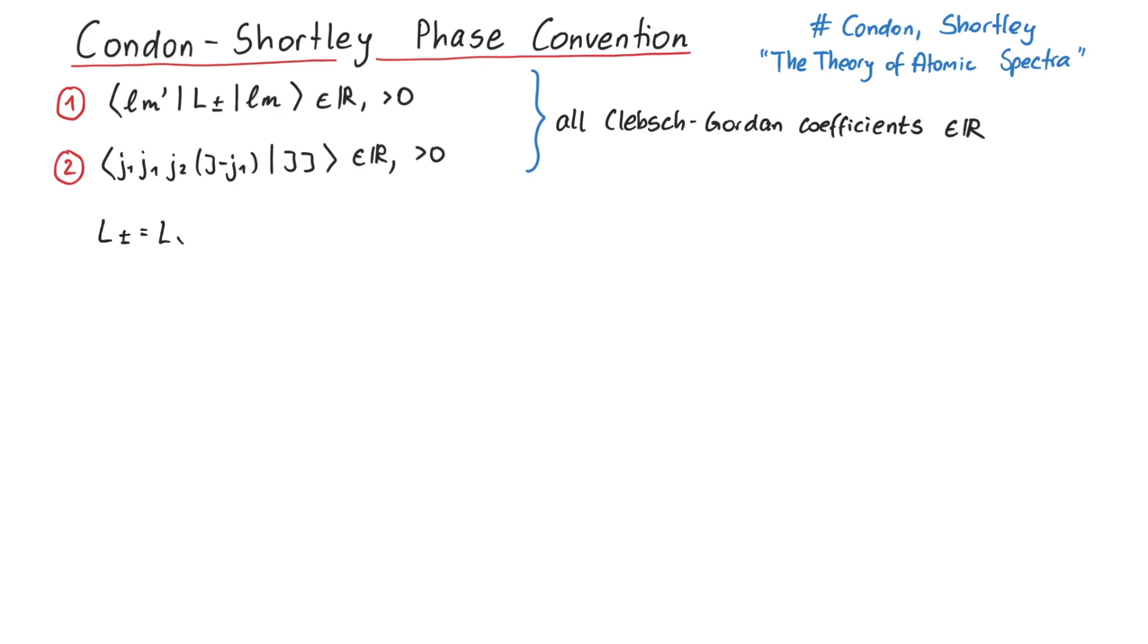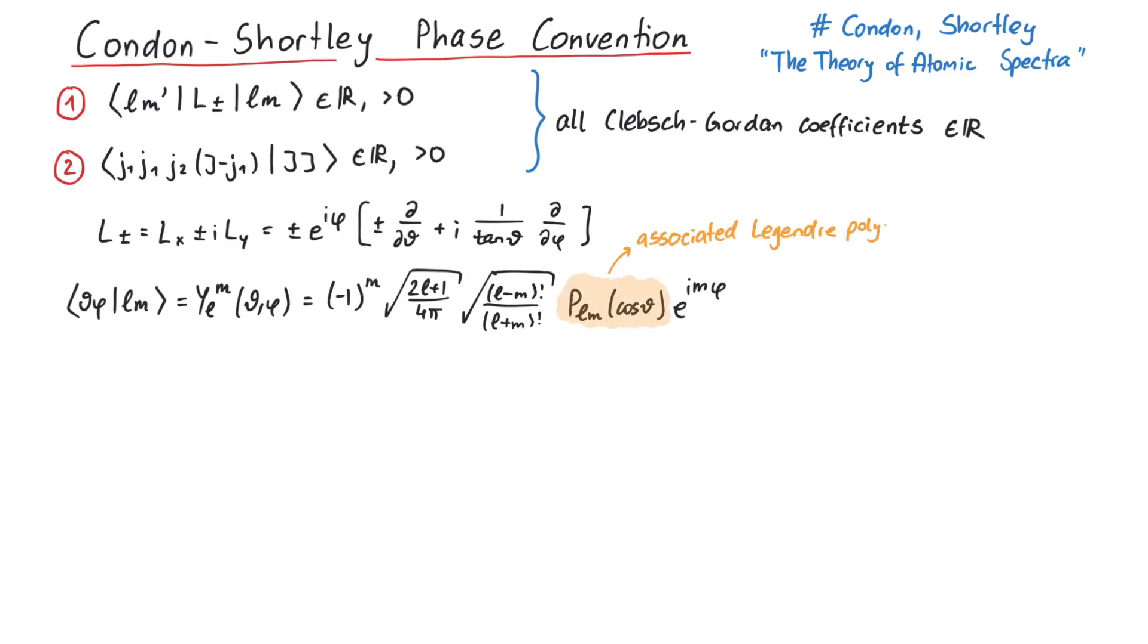This means the ladder operators can be written in terms of partial derivatives with respect to theta and phi, and the states lm are given by the spherical harmonics.